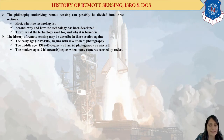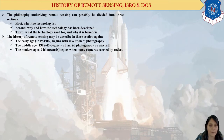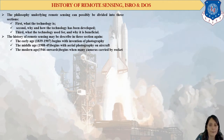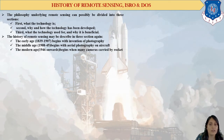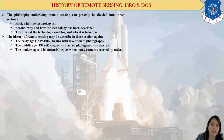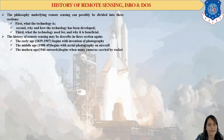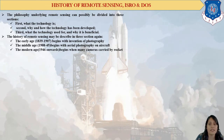The history of remote sensing is described in three sections. The very first is the early age, which is the innovation and invention of photography. Then we came to the middle age, which is photography on aircraft. And then into the modern age, cameras carried by rockets. This is how you can see how this technology evolved.